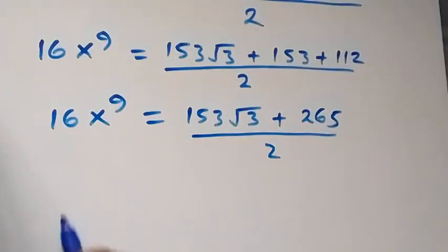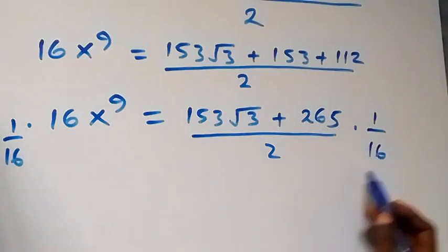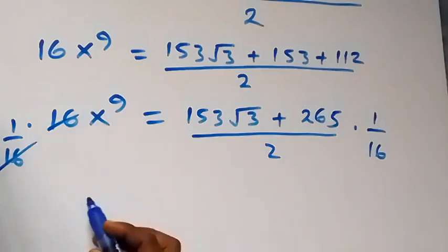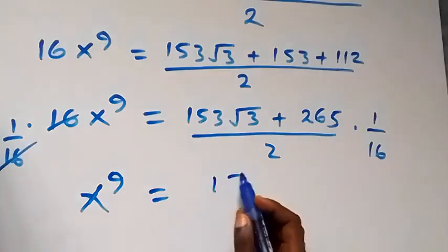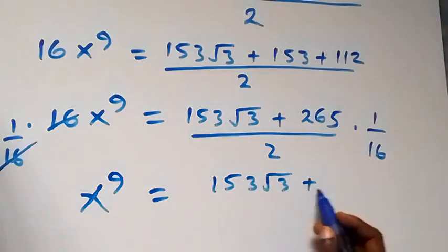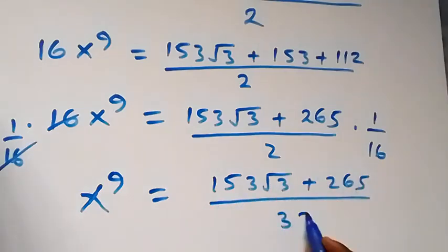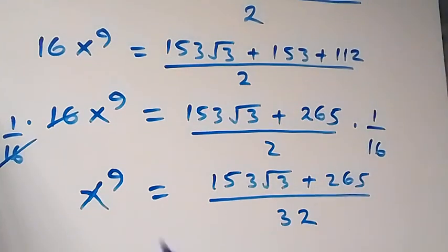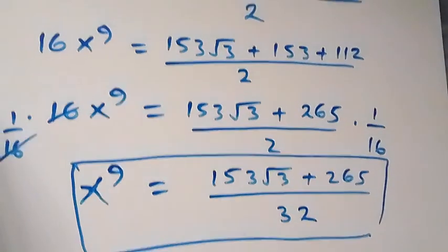We multiply both sides by 1 over 16 in order to get x⁹. This cancels out, and we have x⁹ equals 153 root 3 plus 265, all over 32. So the final answer to this given problem — x⁹ equals (153 root 3 plus 265) over 32. Thank you for watching, don't forget to subscribe for more videos, turn on your notification bell, and share this video. See you next class, bye for now.